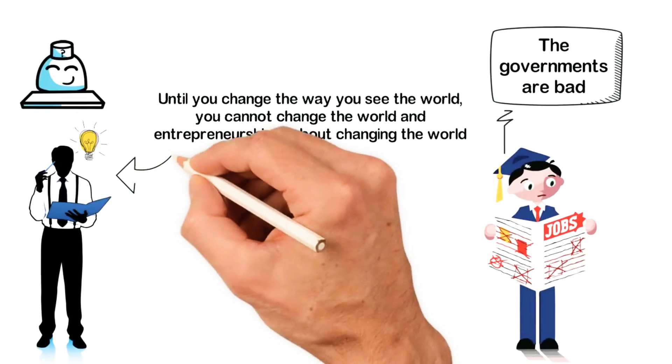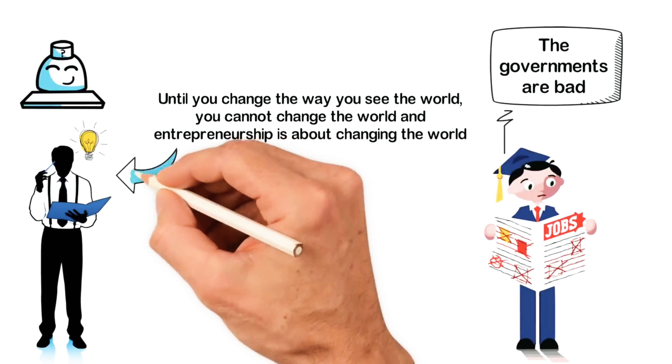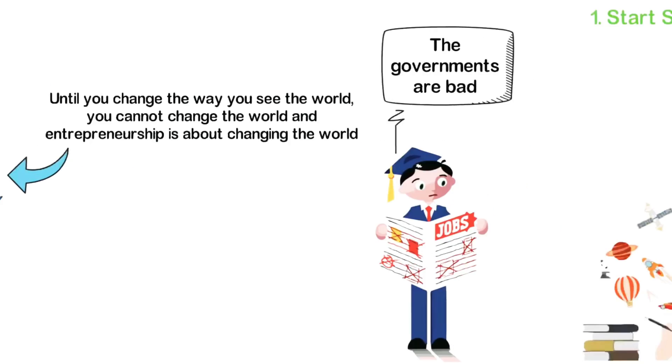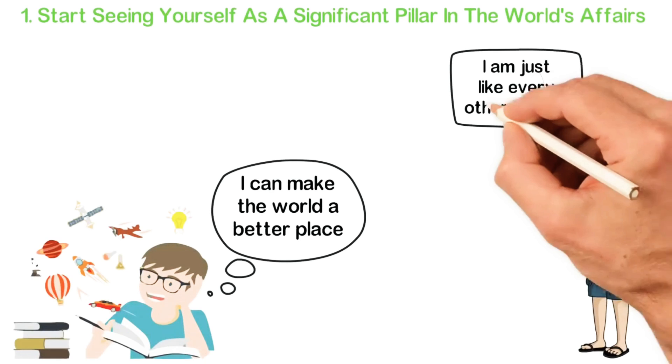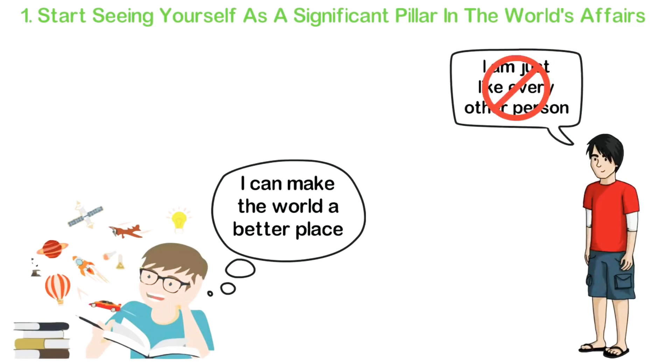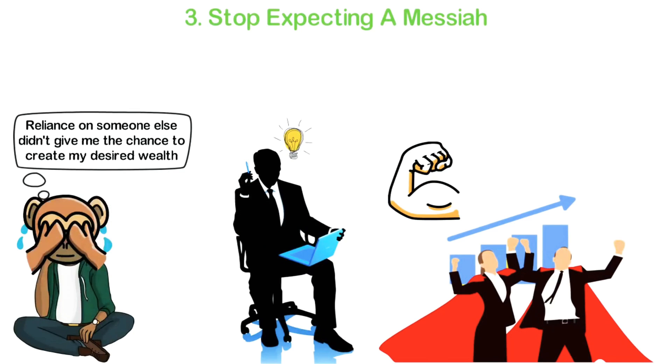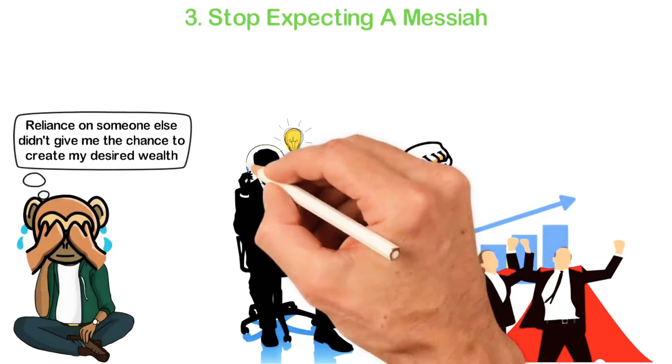In summary, the first thing to do when starting a business isn't to look for the capital or an office building. The very first thing you have to do is to change your worldview. You have to change the way you see yourself in relation to the way you see the world. You have to stop seeing yourself as a victim. You have to start seeing yourself as a victor, a messiah.